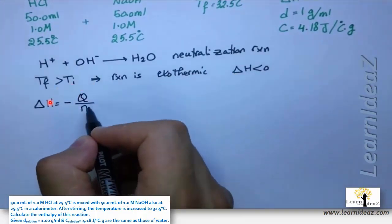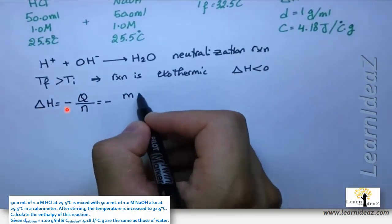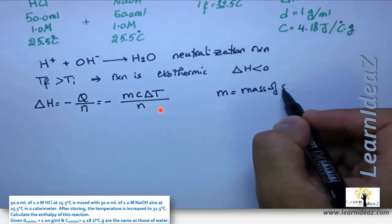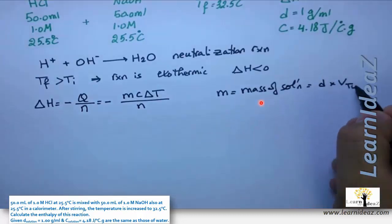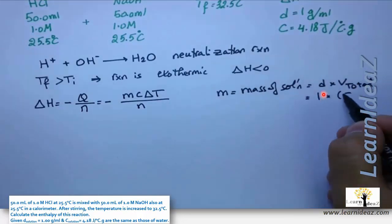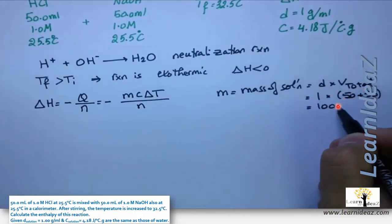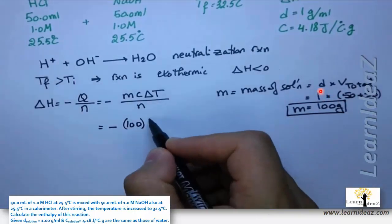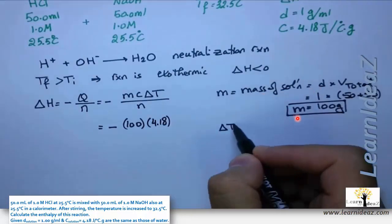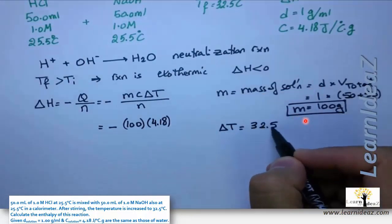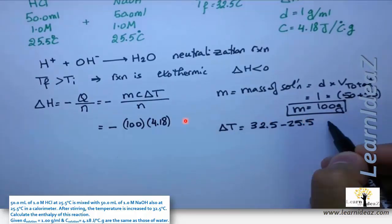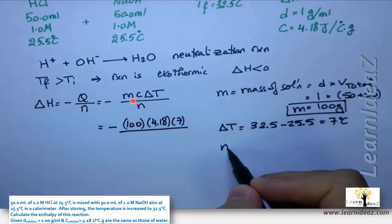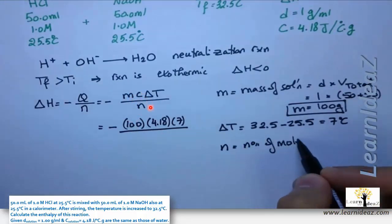The total mass m = density × V_total = 1 × (50 + 50) = 100 grams. Delta t = 32.5 − 25.5 = 7°C. So the numerator is 100 × 4.18 × 7. For n: both reactants have the same concentration and same volume, reacting in a 1:1 ratio, so both are limiting — we use either one.